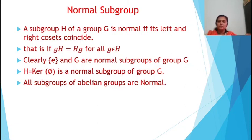Now we have a definition of normal subgroup. A subgroup H of a group G is normal if its left and right cosets coincide, that is, if gH = Hg for all g ∈ G. Clearly, the singleton set {E} and G itself are normal subgroups of G. And from our theorem, the kernel of a homomorphism is a normal subgroup of a group G. By definition, all subgroups of abelian groups are normal.